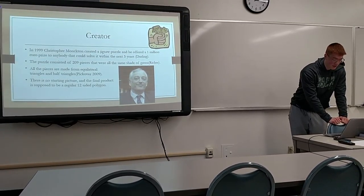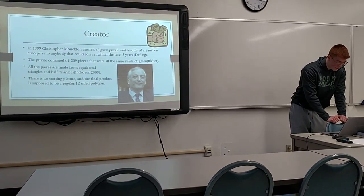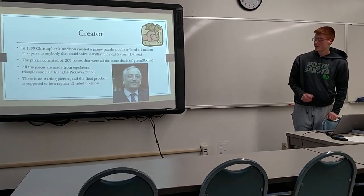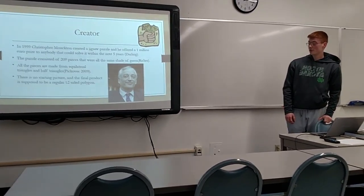And so all the pieces were equilateral triangles and half triangles. So when you put them together you're supposed to get a regular 12-sided polygon.